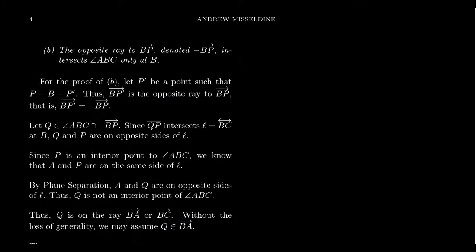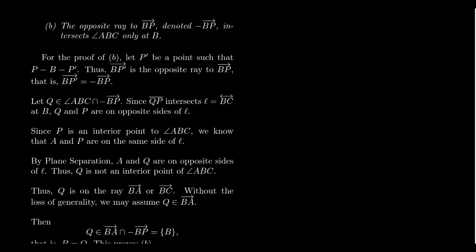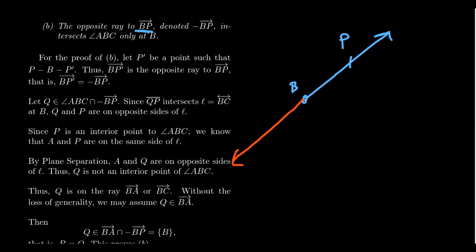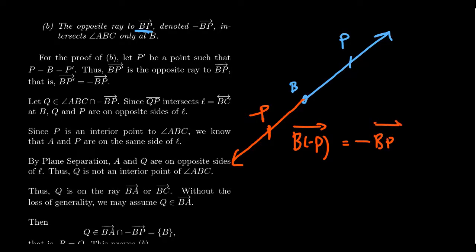That was the first property. The next one is Property B. Whenever you have a ray BP, the line determined by B and P also goes the other way. There's some point P prime on the other side such that B is between P and P prime. The ray BP prime is called the opposite ray of BP, commonly denoted negative BP. Every line is the union of a ray with its opposite.